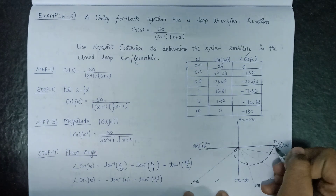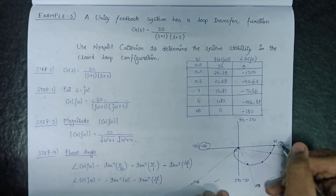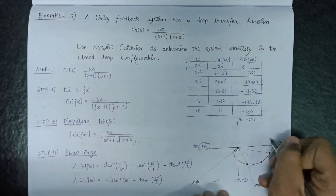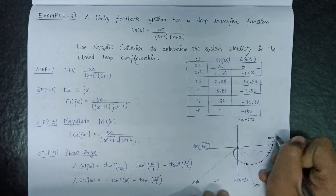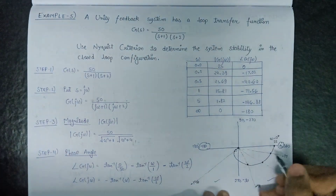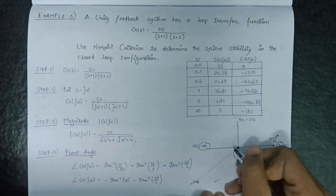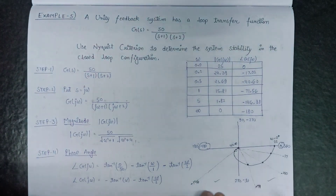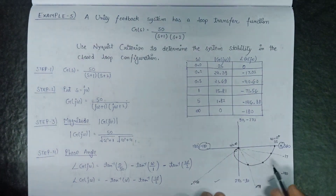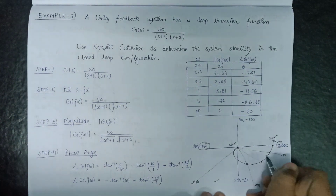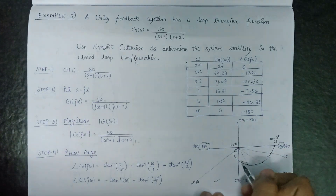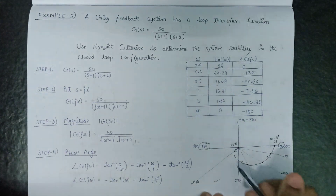The polar plot originates from magnitude 25 at ω=0⁺ and goes to the origin at ω=infinity. This is our complete polar plot, and it moves in the clockwise direction.